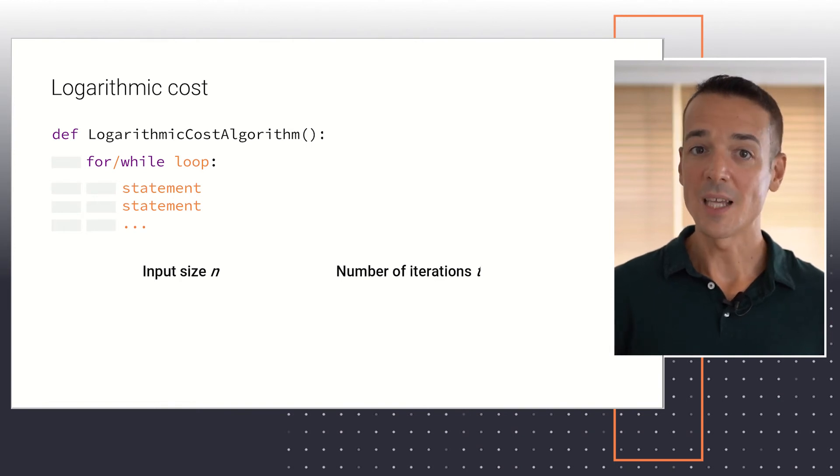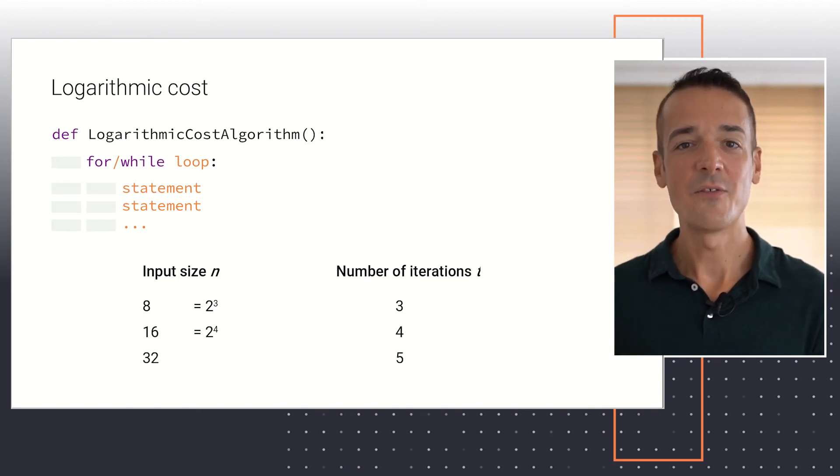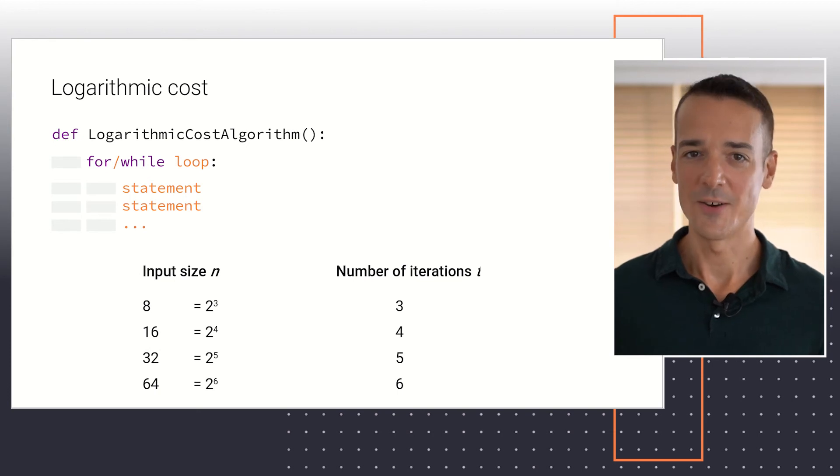For a problem size of 8 elements, we'd need 3 iterations in the loop, because 2 to the 3 is equal to 8. For a problem size of 16 elements, we'd need 4 iterations in the loop, because 2 to the 4 is 16. For 32 elements, we'd need 5 iterations, 2 to the 5 is 32. For 64 elements, 6 iterations, 2 to the 6 is 64, and so on.